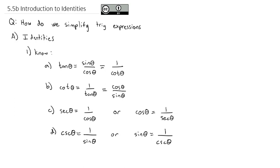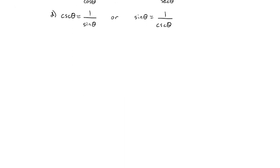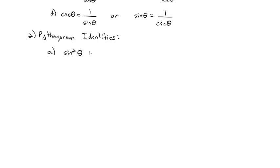We've already seen these before. There's another set of identities that we're going to use a lot, and these are called the Pythagorean identities. We've actually already seen the first one — we've used it quite a bit: sine squared of theta plus cosine squared of theta is equal to 1.